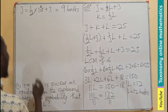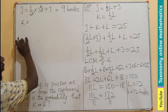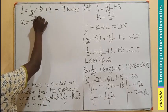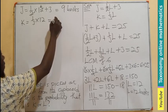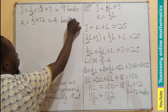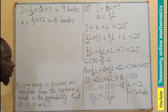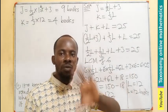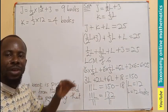For K: K equals one-third of L, which is one-third of 12, giving K equals 4 books. Checking: J plus K plus L equals 9 plus 4 plus 12 equals 25. This confirms our answers.